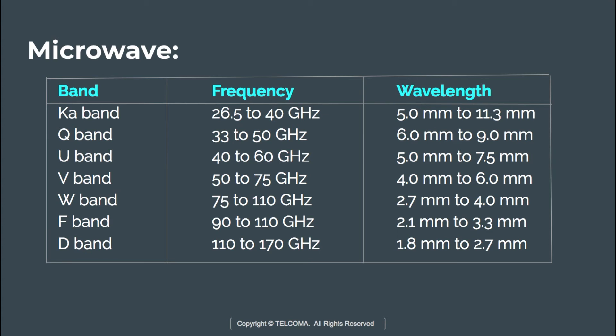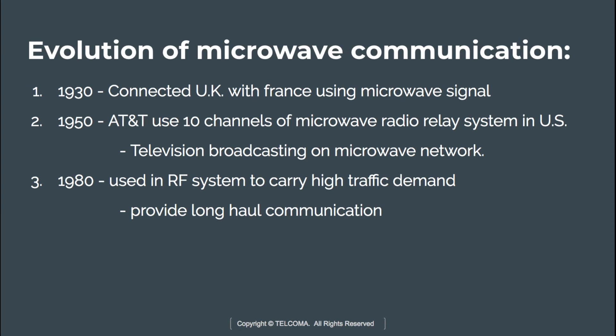This covers the microwave frequency bands defined by IEEE, ITU, and NATO. Moving to the evolution of microwave communication: microwaves are as old as the universe — about 14 billion years. Looking back about 80 years, in 1930 microwaves were used to connect the UK with France. In 1950, AT&T built a 10-channel microwave radio relay system in the US that carried 5,400 long-distance calls per channel, supporting 54,000 simultaneous calls.